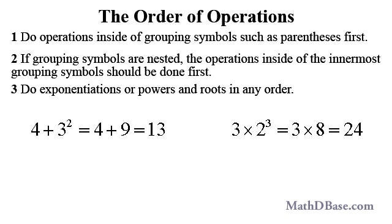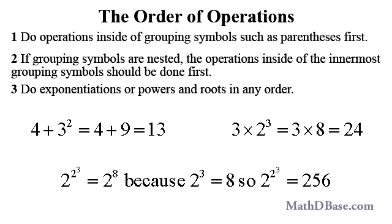Stacked exponents should be evaluated from the uppermost down. 2 to the 2 to the 3rd is equal to 2 to the 8th, because 2 to the 3rd is equal to 8, and so 2 to the 2 to the 3rd is equal to 256.